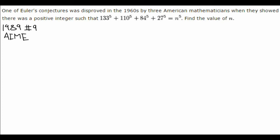Hi guys, it's Daniel here, and today we're going to do a 1989 AIME number 9. One of Euler's conjectures was disproved in the 1960s by three American mathematicians when they showed there was a positive integer such that 133^5 + 110^5 + 84^5 + 27^5 = n^5. Find the value of n.